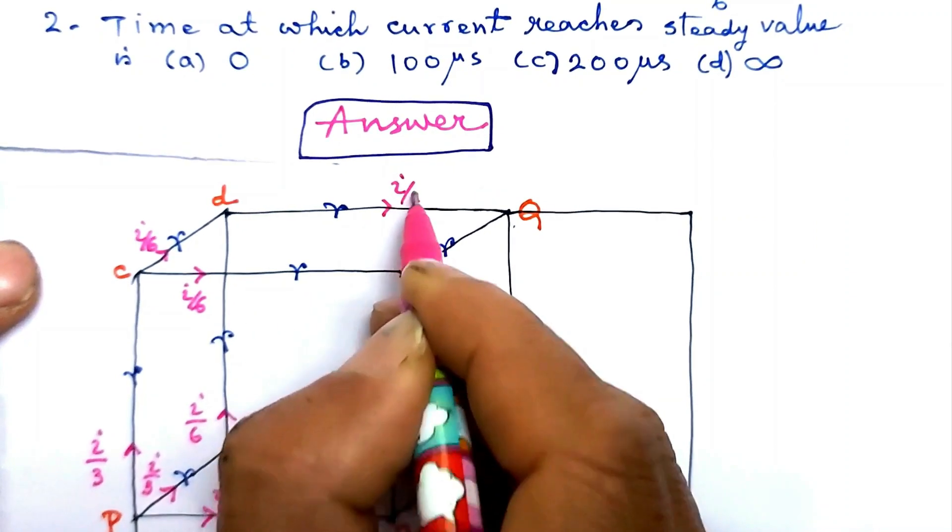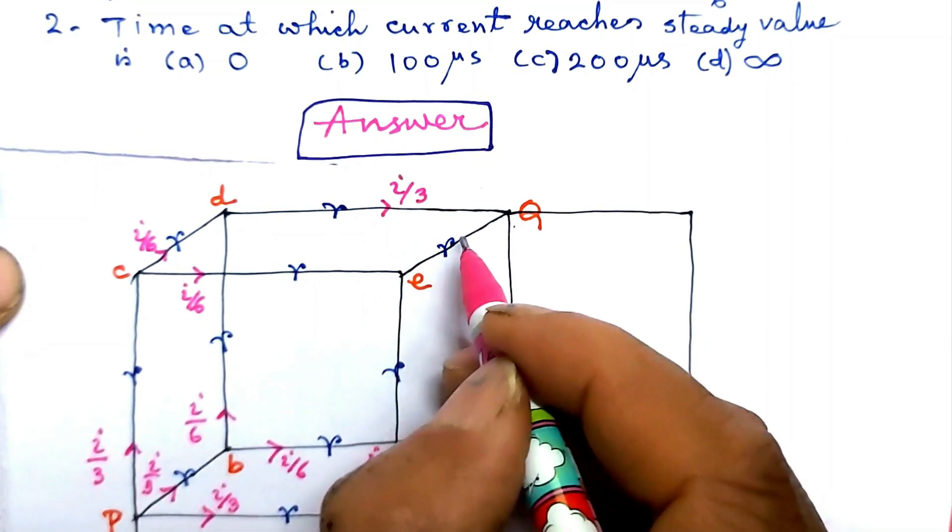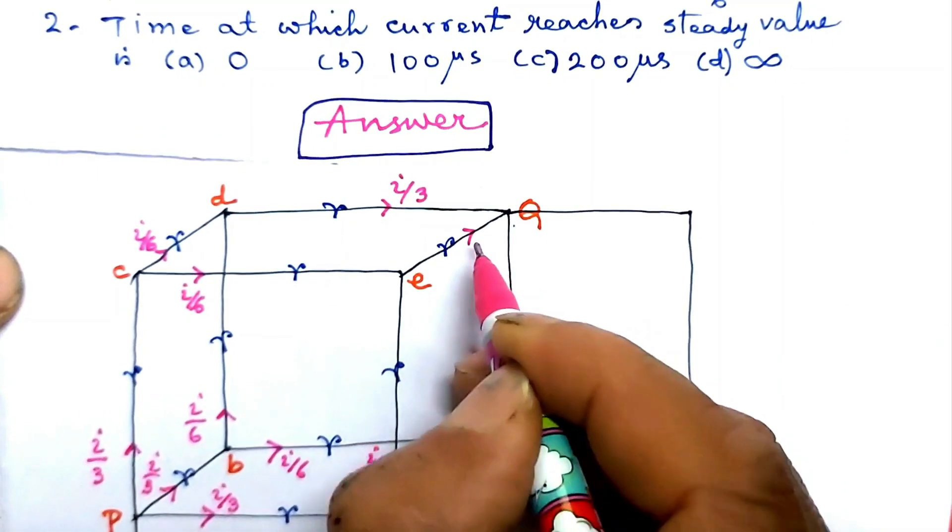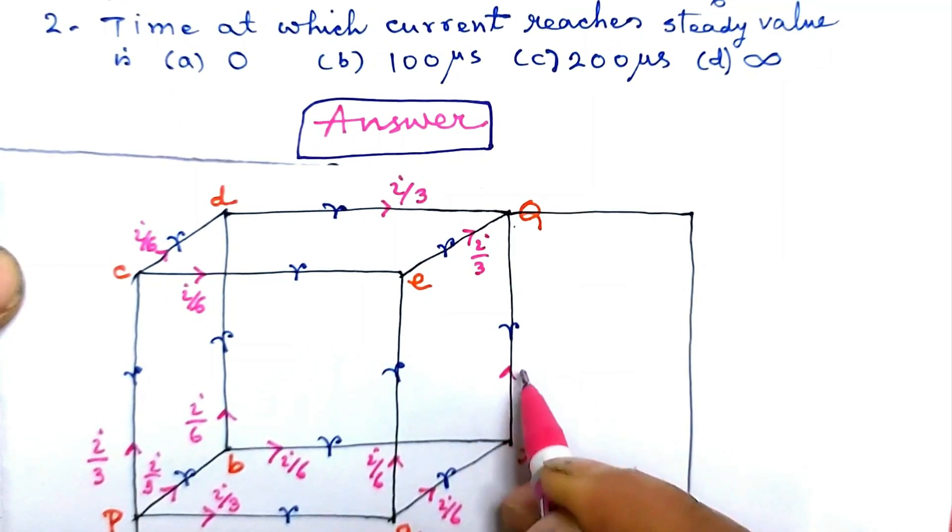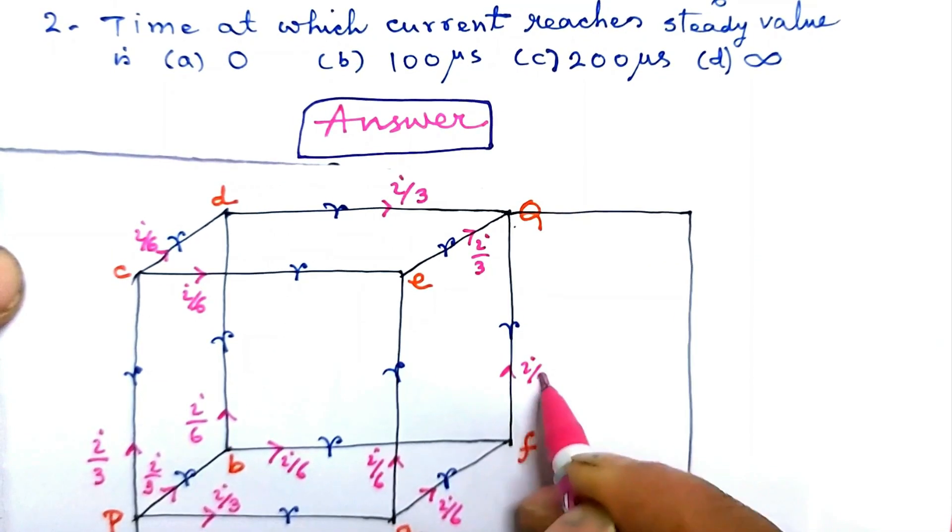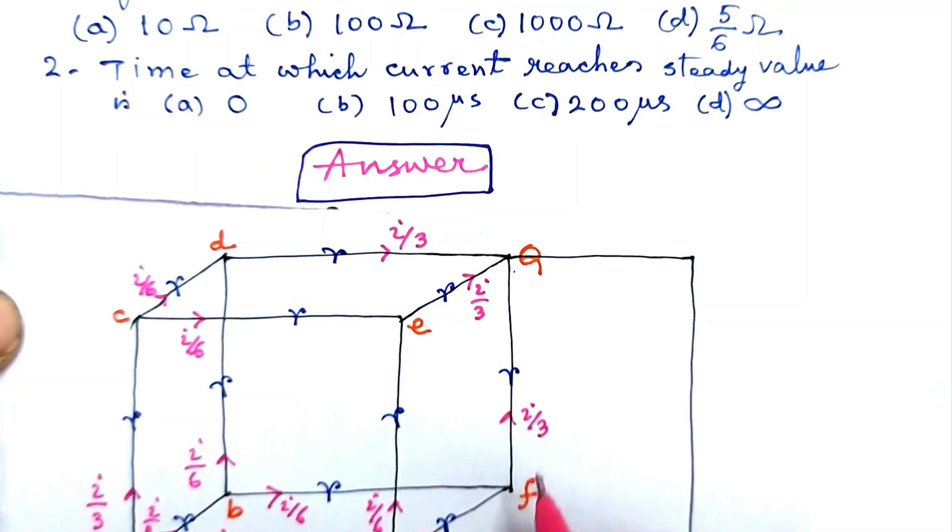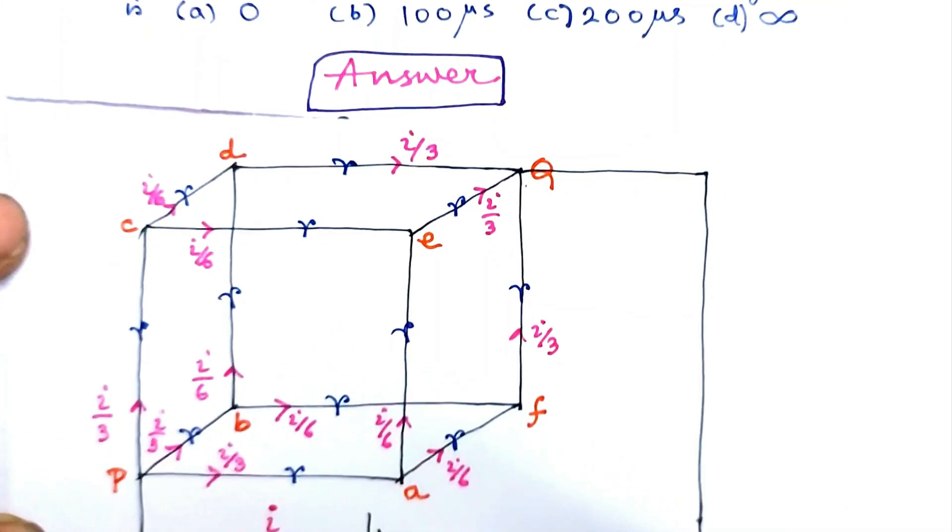Currents along ce ae add up to i by 3 along eq. Also, current along fq is i by 3 as obtained through addition of currents along af and bf.